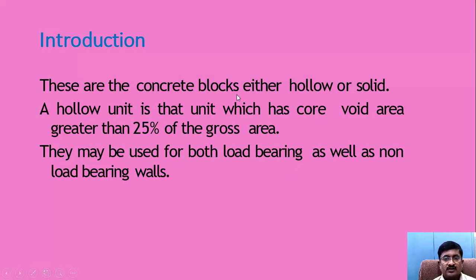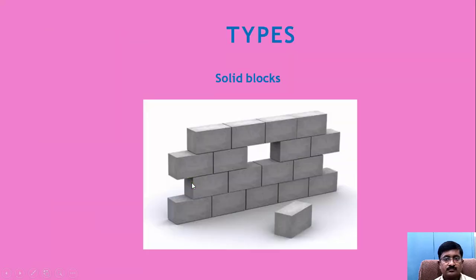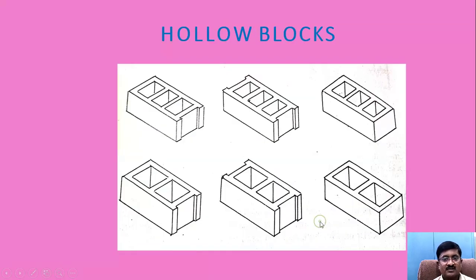These are the concrete blocks, either hollow or solid. A hollow unit is one which has a core void area greater than 25% of the gross area. They may be used for both load bearing as well as non-load bearing walls. We will discuss regarding the types of solid blocks and hollow blocks, and we have seen how these particular blocks are used in construction and what the various specifications are.